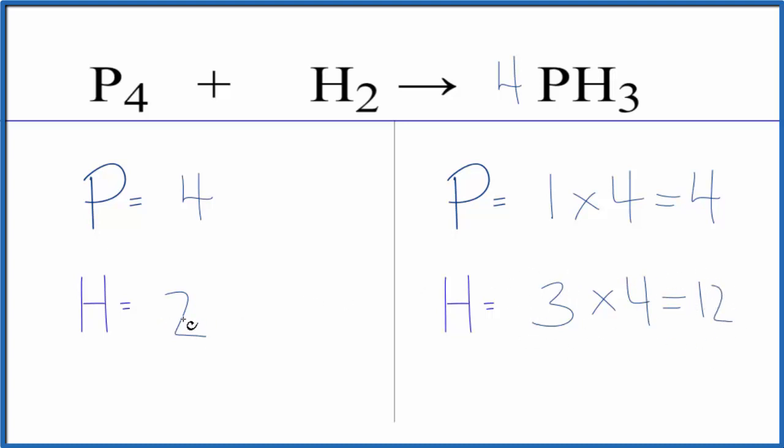Now since it's even, all we need to do is get twelve hydrogens here. We put a coefficient of six in front of the H2. Two times six, that gives us twelve.